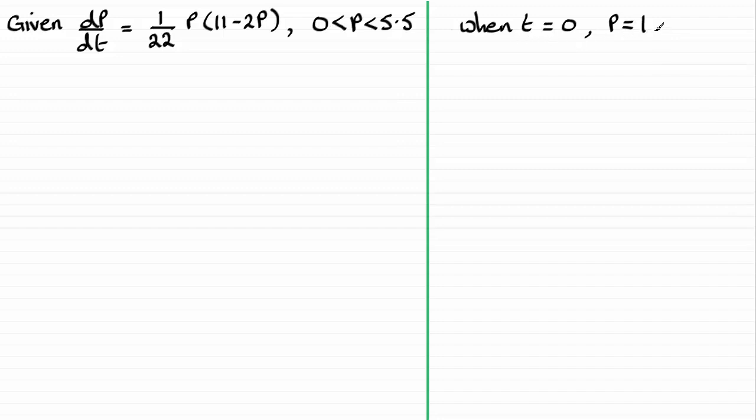So this will allow us to work out the constant when we solve this differential equation. And then we've got to work out the value of t when the population has doubled. In other words, when p equals 2. OK, so that's basically what we're going to be doing.